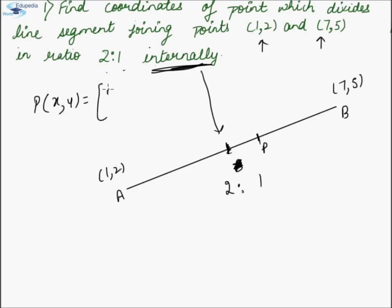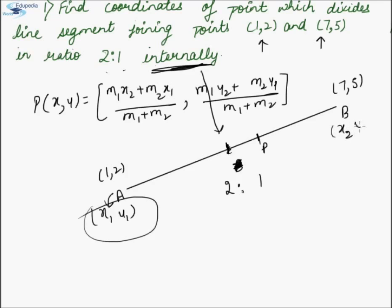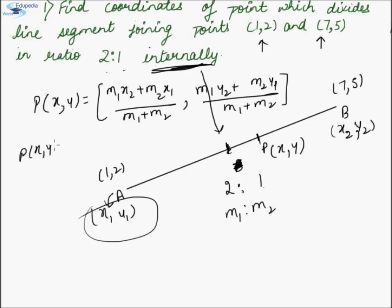The formula is given as P = ( (M1·x2 + M2·x1)/(M1+M2), (M1·y2 + M2·y1)/(M1+M2) ), where x1,y1 denotes the coordinates of A, x2,y2 denotes the coordinates of B, x,y denotes the coordinates of P, and M1:M2 is the given ratio. On substituting different values in this formula, we will get P(x,y).